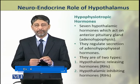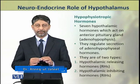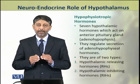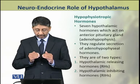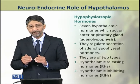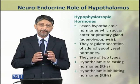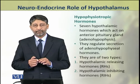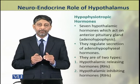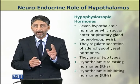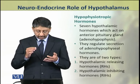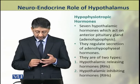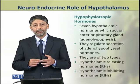First we shall discuss the hypophysiotropic hormones. Seven hypothalamic hormones act on anterior pituitary gland, that is adenohypophysis. They regulate the secretion of adenohypophysial hormones. These hormones of hypothalamus are of two types: first the hypothalamic releasing hormones, and number two the hypothalamic inhibiting hormones.